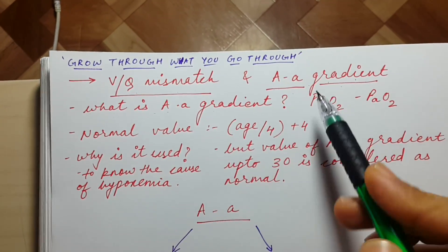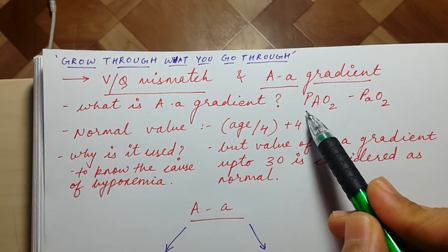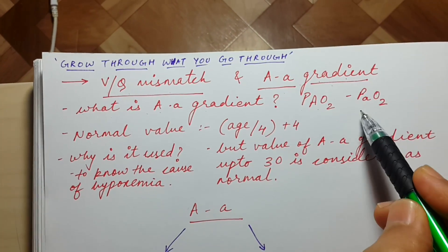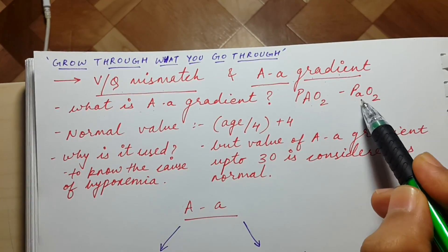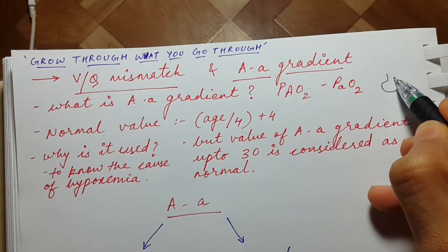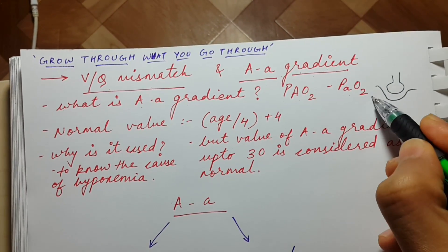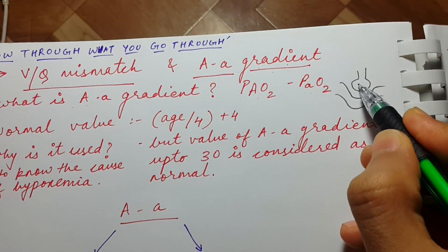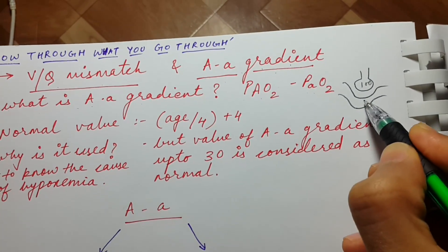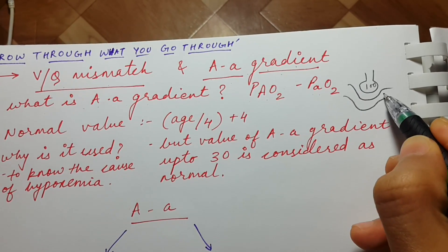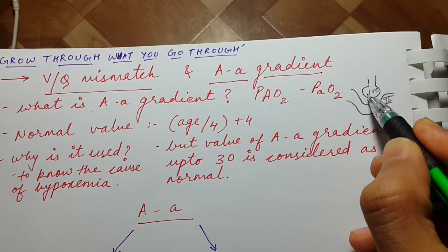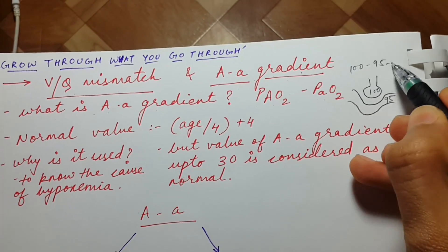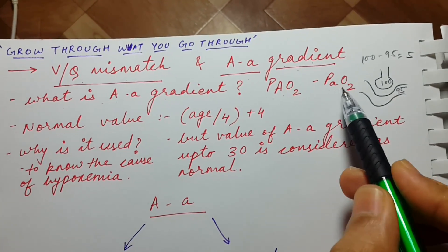So what is AA gradient? AA gradient is basically the difference in partial pressure of oxygen in the alveolar side and the partial pressure of oxygen in the arterial side. If the partial pressure of oxygen in the alveoli is 100 and on the arterial side is 95, then the AA gradient will be 100 minus 95, that is 5. So this is basically AA gradient.